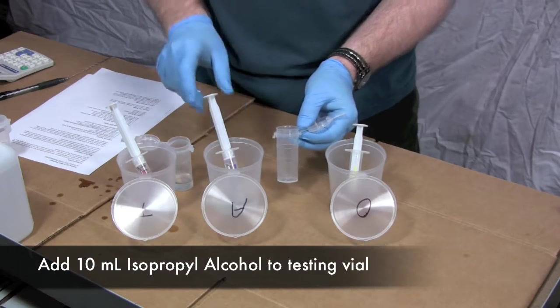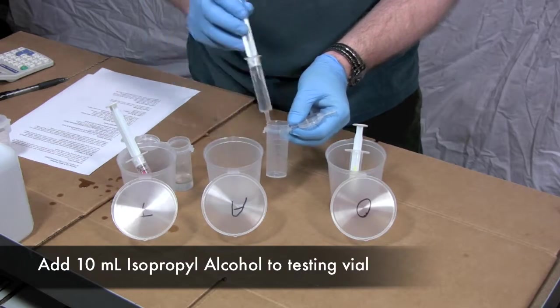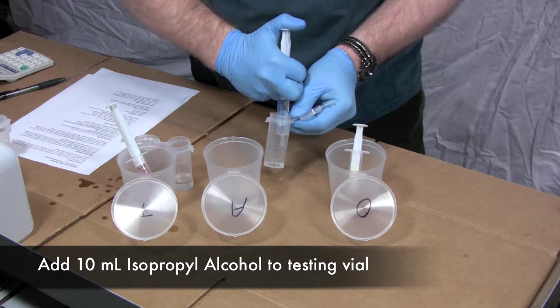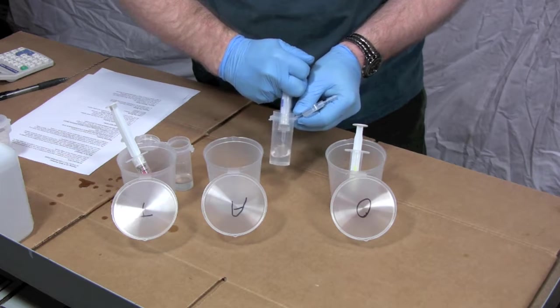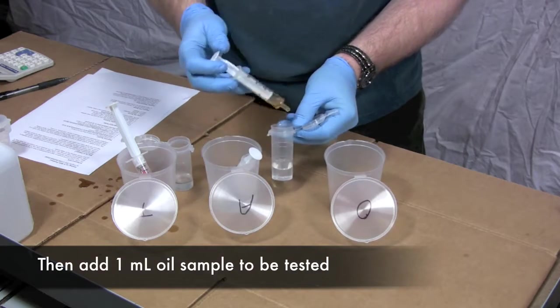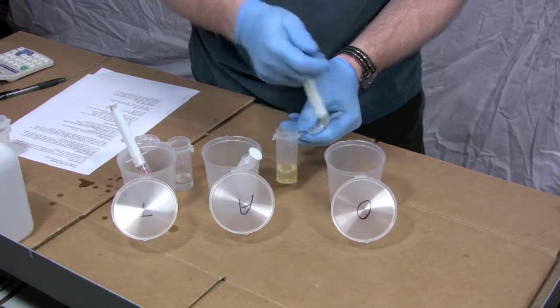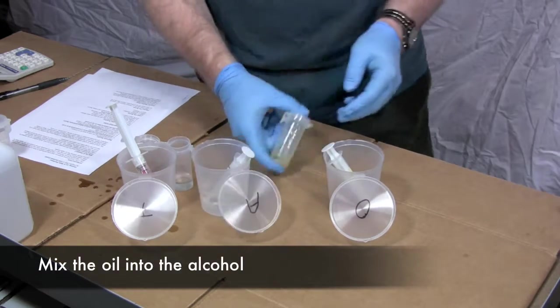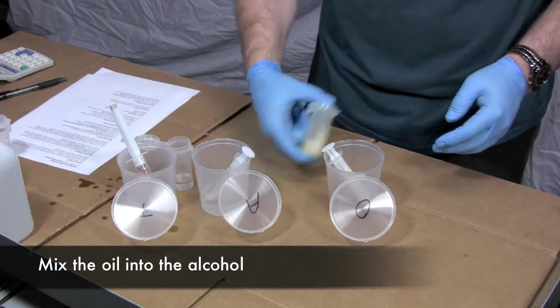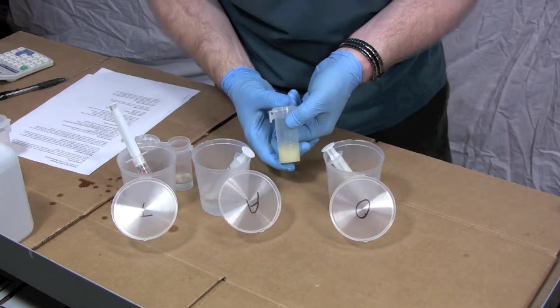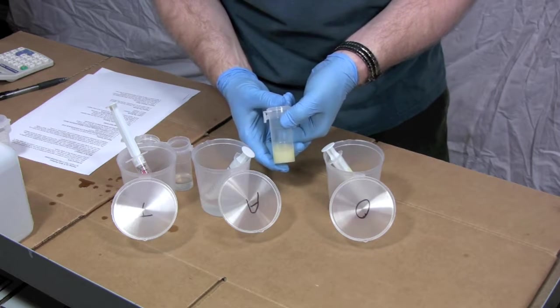We're going to do the titration by putting 10 milliliters of isopropyl alcohol into our vial. And I've just pre-measured these out. We're going to put our one milliliter of oil into here. And then I'm going to cap this and just shake it a little bit to make sure we fully dissolve that oil sample. So you'll notice it's going to look kind of yellowish. That's okay. That's what it kind of needs to look like.